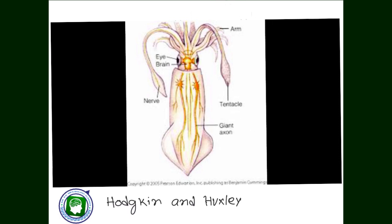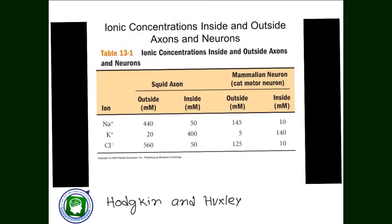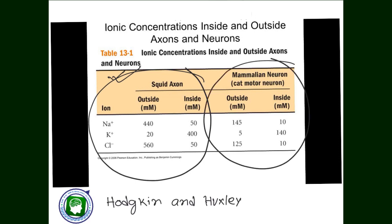Now pause the video and write down the different ionic concentrations in the intracellular and extracellular fluid of a squid axon, on which Hodgkin worked, and a mammalian neuron — a human neuron would be more or less similar to the cat neuron given here.